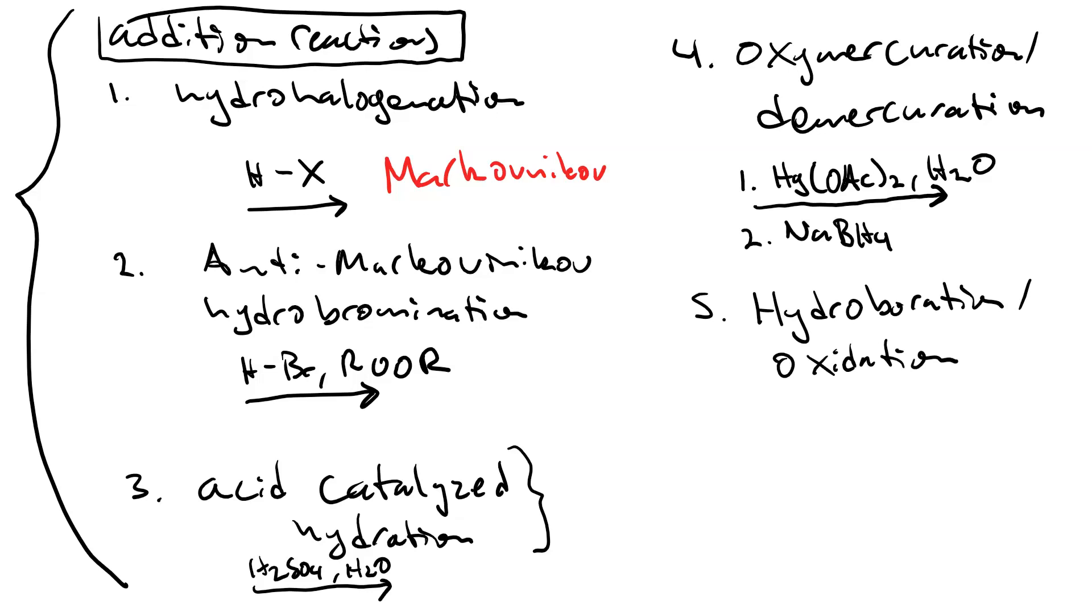You can do hydroboration oxidation to get an anti-Markovnikov alcohol. Your first step, the hydroboration, you use borane BH3 and tetrahydrofuran THF. For the oxidation step, you use sodium hydroxide and hydrogen peroxide. Again, your product of hydroboration oxidation is an anti-Markovnikov alcohol.